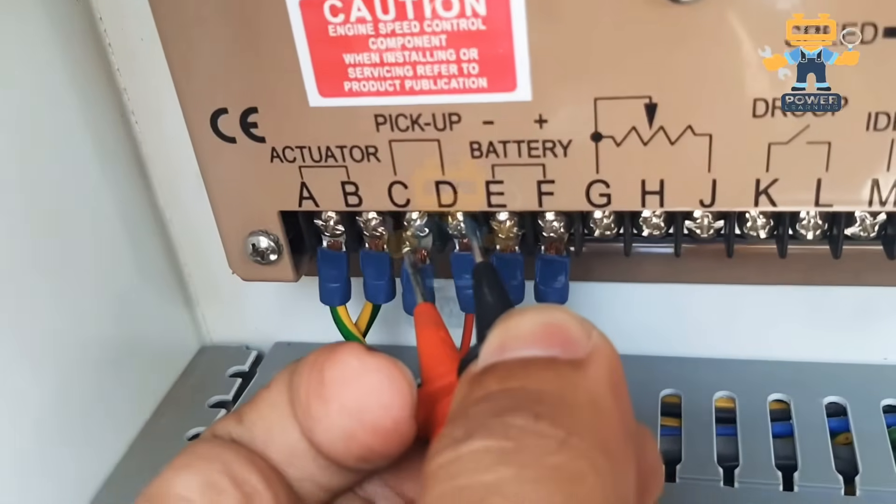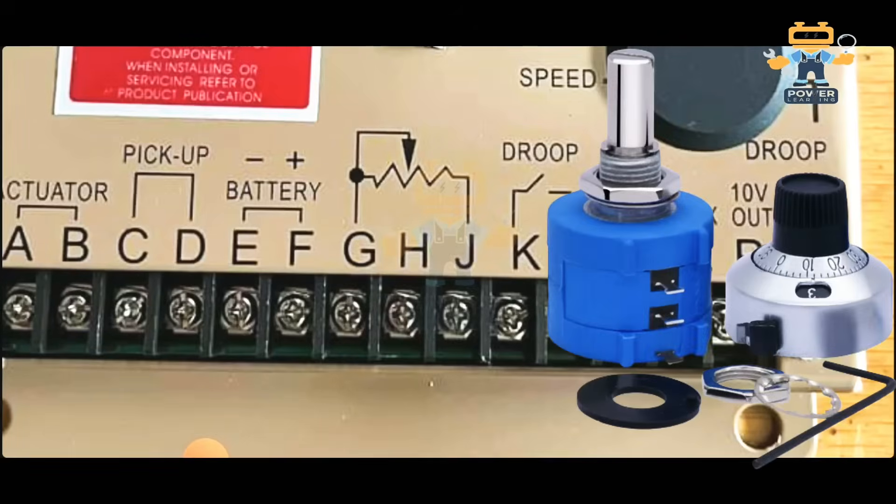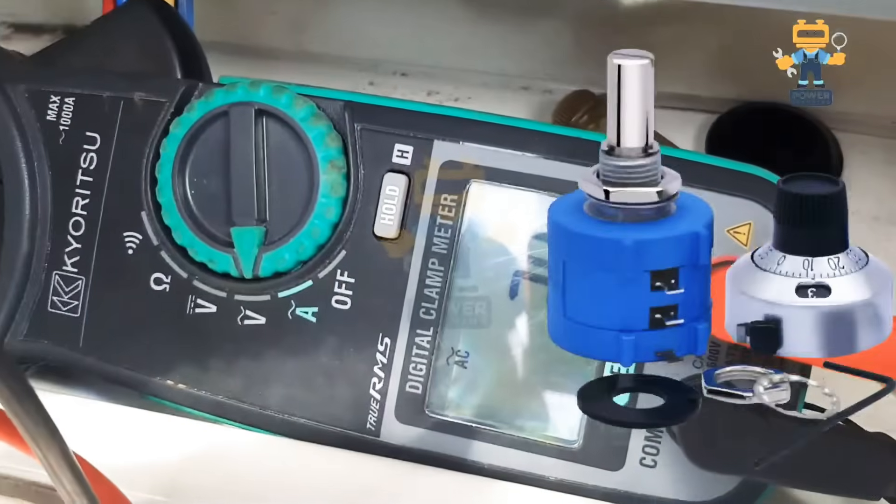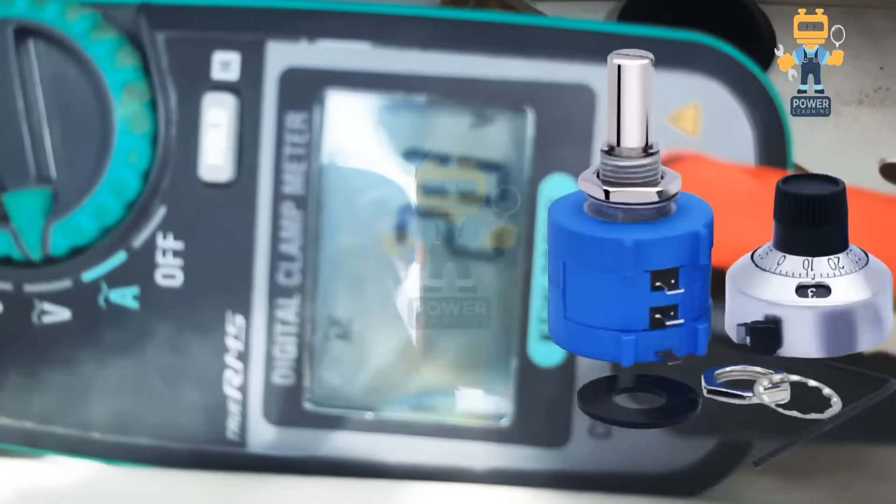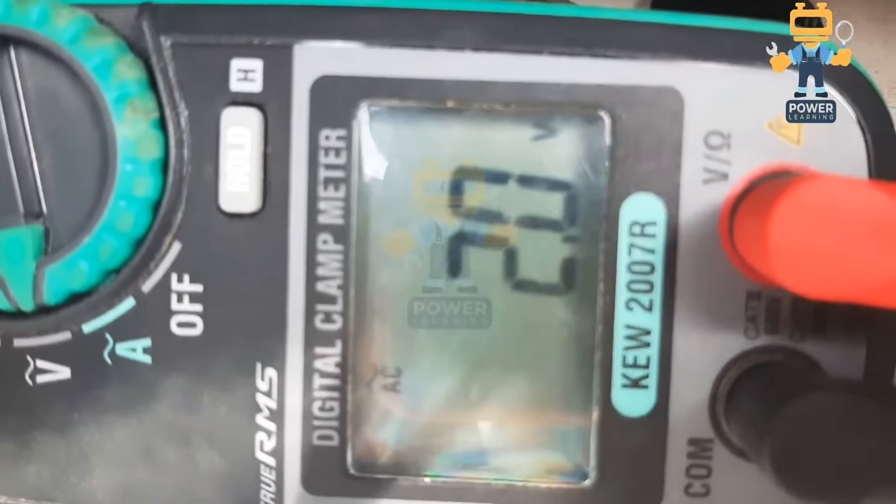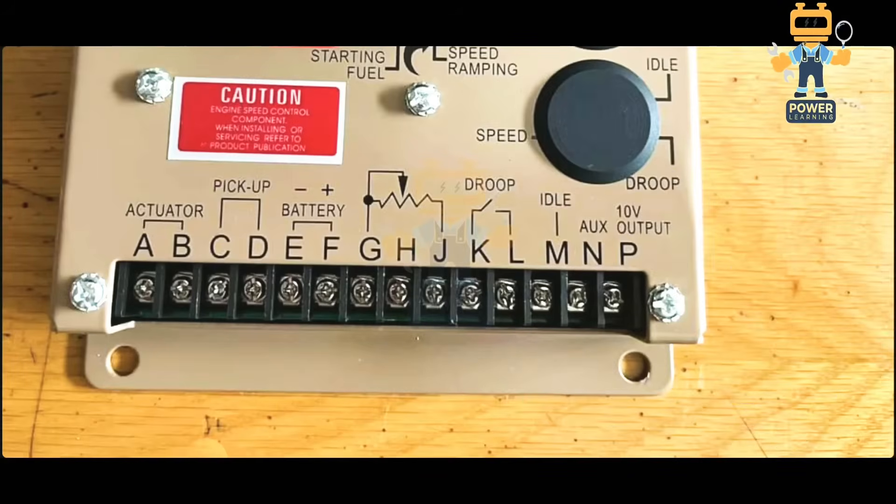This is the function of pickup and actuator. After that, here we have G, H, J. Here you see it's showing a symbol of a variable potentiometer. On these three terminals - G and J - these two terminals you will connect external potentiometer to set the engine speed plus or minus 10 percent from your control panel. You can install a variable 10 kilo ohm resistor so you can increase or decrease your engine speed.